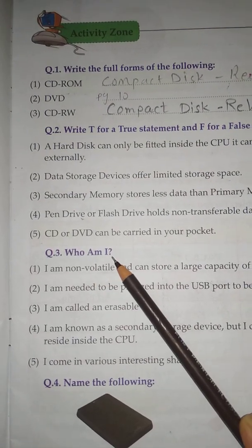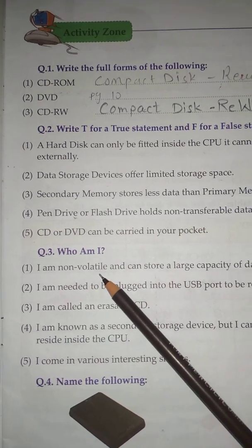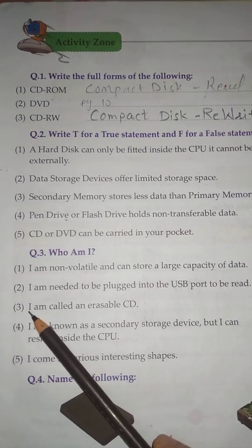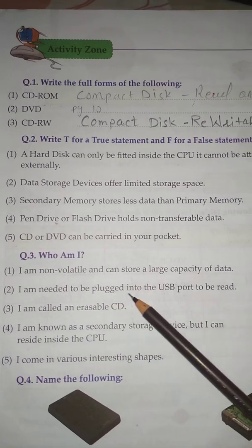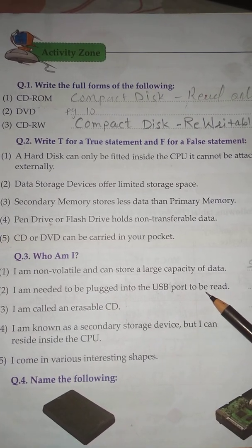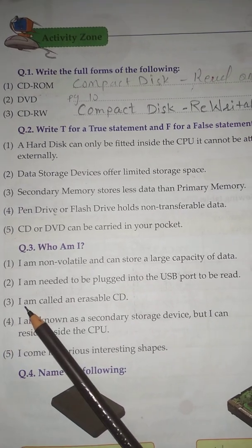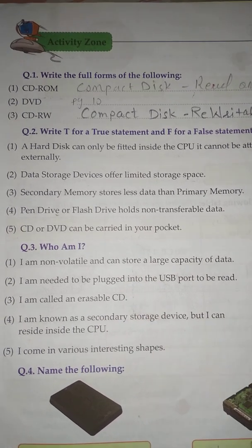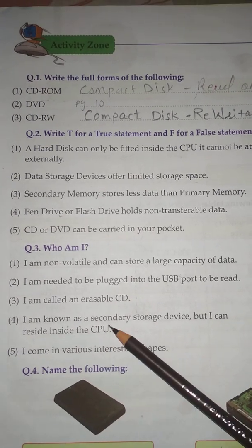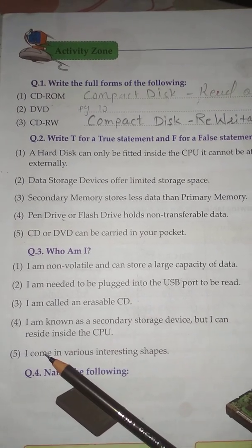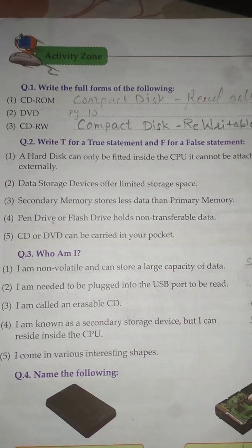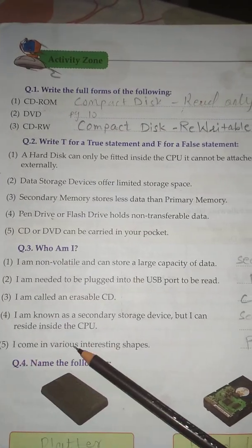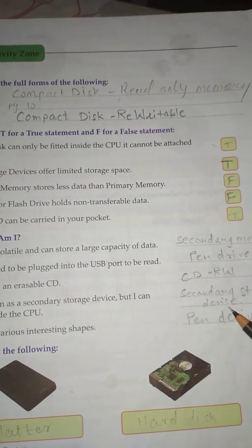Question No. 3: Who am I? No. 1 — I am non-volatile and can store a large capacity of data. Answer is Secondary Memory. No. 2 — I am needed to be plugged into the USB port to be read. Answer is Pen Drive. No. 3 — I am called an erasable CD. Answer is CD-RW. No. 4 — I am known as a secondary storage device but I can reside inside the CPU. Answer is Secondary Storage Device. No. 5 — I come in various interesting shapes. Answer is Pen Drive.